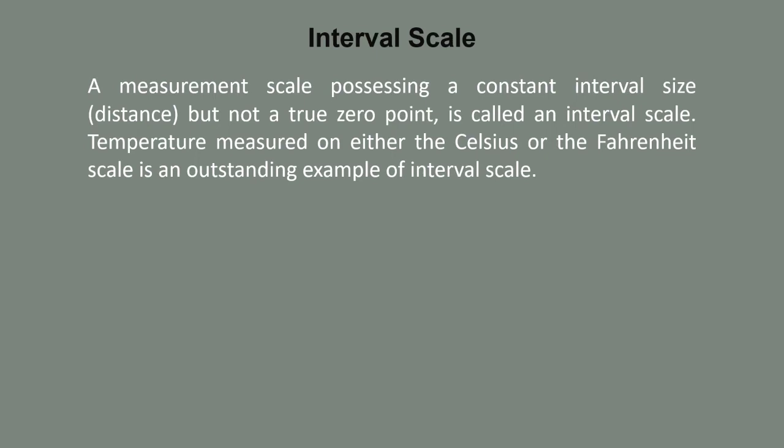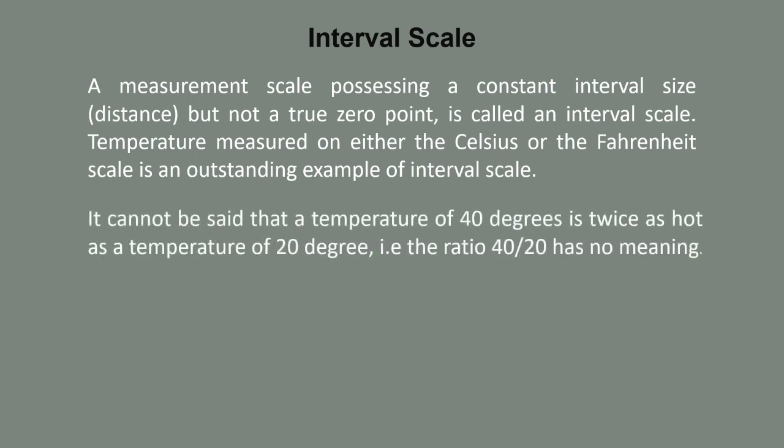Temperature measured on Celsius and Fahrenheit scale is an outstanding example of interval scale. It cannot be said that the temperature of 40 degrees is twice as hot as the temperature of 20 degrees. The ratio of 40 over 20 has no meaning because ratio does not exist in interval scale.